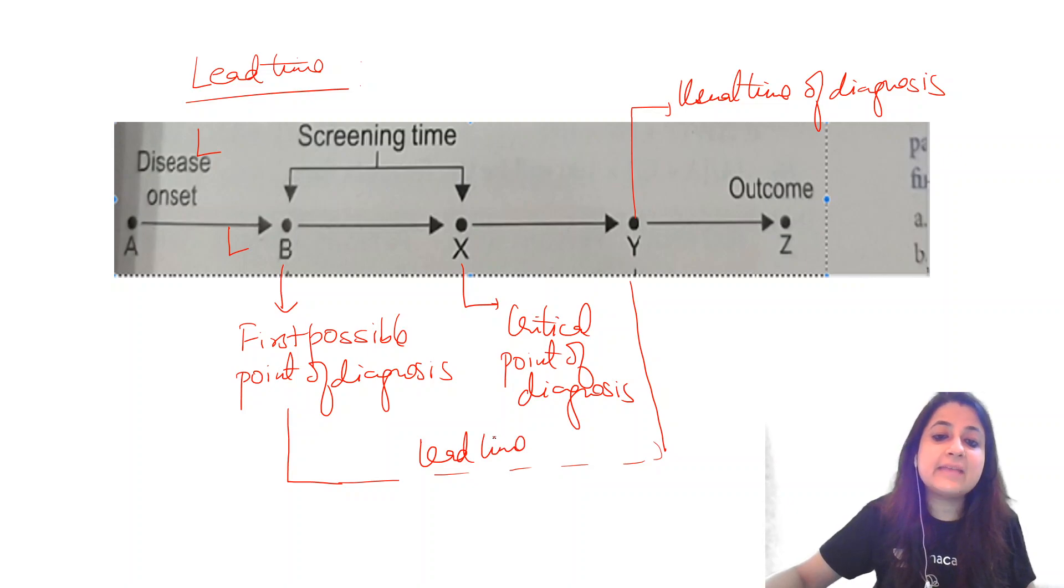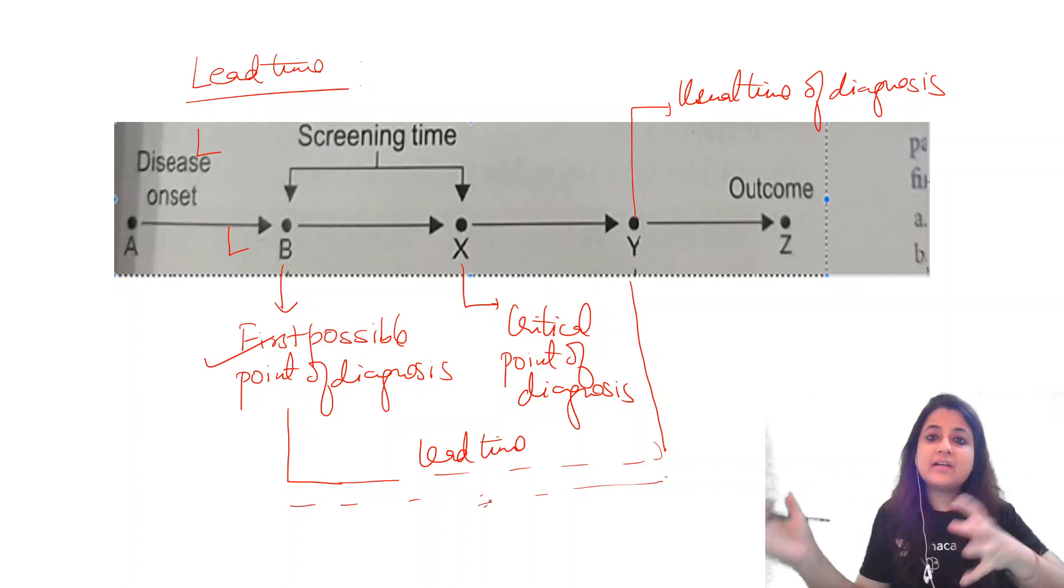The time between first possible point of diagnosis and the usual time of diagnosis, that is what is known as lead time. You are leading in the detection of disease by so much time. So you are early in the detection of the disease by this time interval. So by that you can prolong the survival and bring about desired changes.